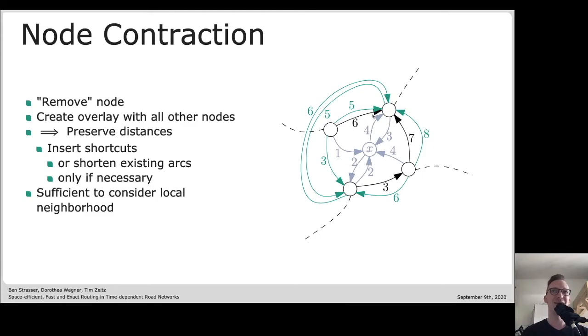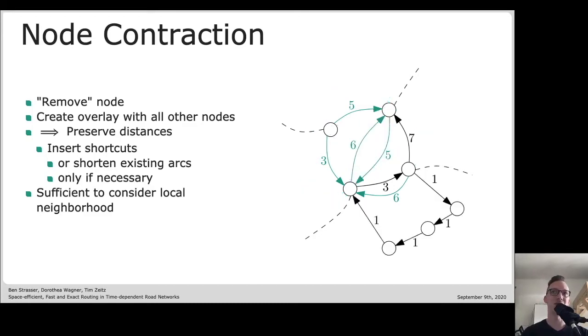The preprocessing of contraction hierarchies, at least given already an ordering of the nodes which gives us the importance, we can iteratively remove a single node and insert additional shortcut arcs which represent the distance of the path over the node. For example, here's an arc with length five, which represents first going here, one to X and then four up here again. Then we do a little bit of cleanup, remove multiple arcs and some shortcuts may not be necessary because there are other shortest paths through the rest of the graph. Once we do this step, which is called node contraction for every node, we get an augmented graph.